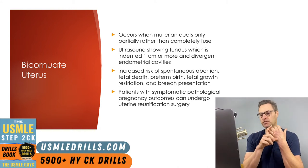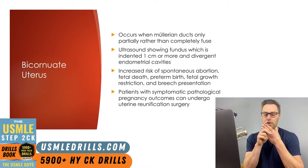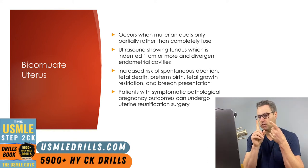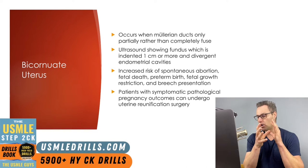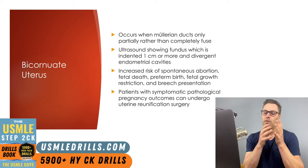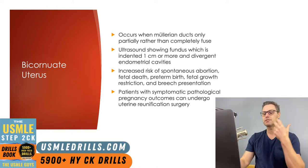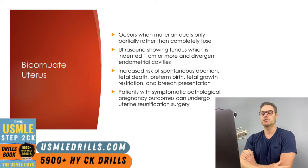Complications of the bicornate uterus are similar to the septate uterus, with increased risk of spontaneous abortions and breech presentation, but fetal death, preterm birth, and fetal growth restriction are also seen at higher rates. Treatment involves uterine reunification surgery, which is more complicated than the simple resection performed for septate uterus. However, after reunification surgery, rates of complications typically decrease.